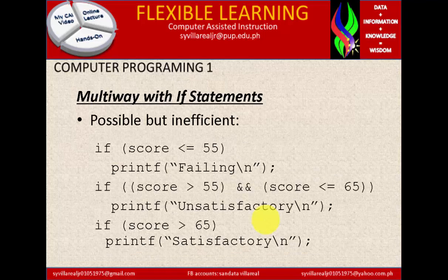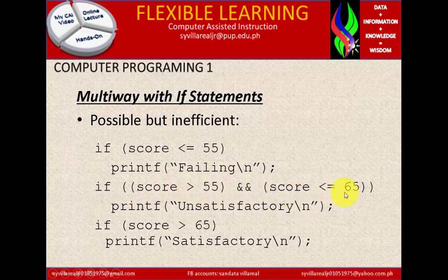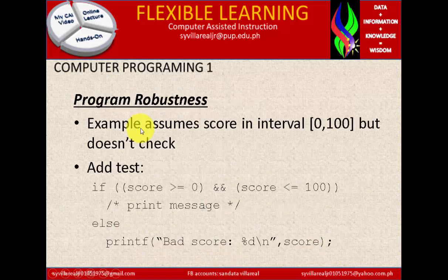Multi-way with independent if statements — possible but inefficient. If score is less than or equal to 55, printf failing. Using double parentheses with AND: if score is greater than 55 AND score is less than or equal to 65, printf unsatisfactory. If score is greater than 65, printf satisfactory. Now, program robustness — this approach is more easily understandable, but they have the same output.